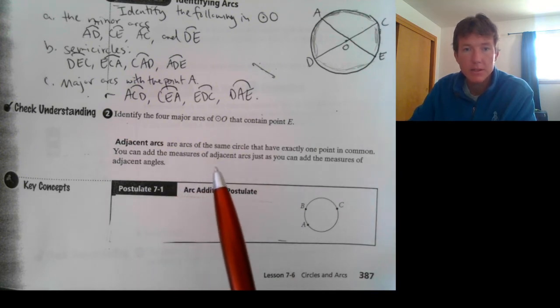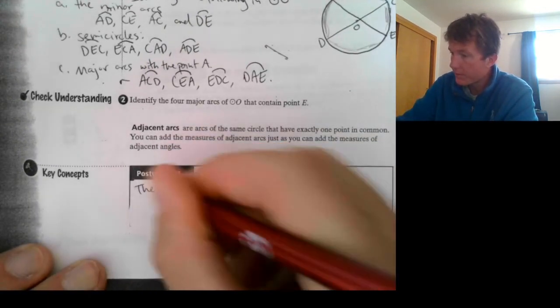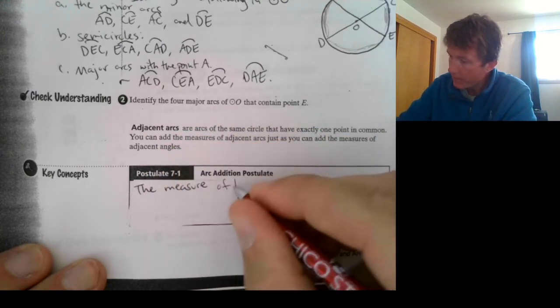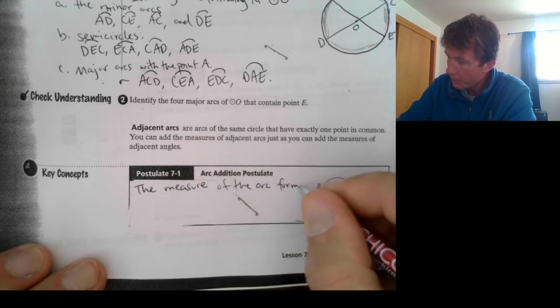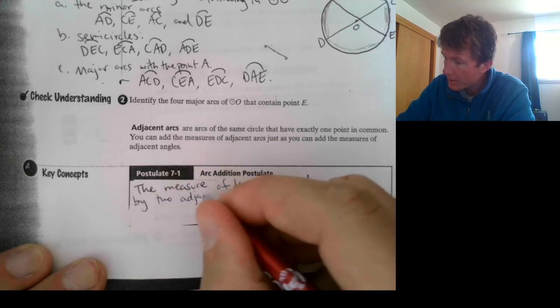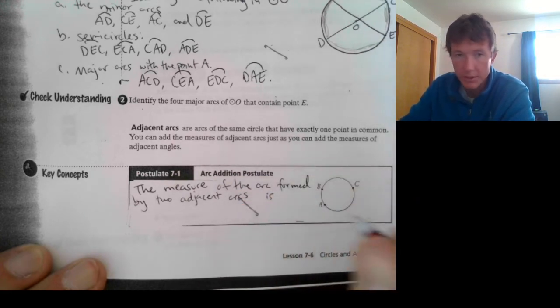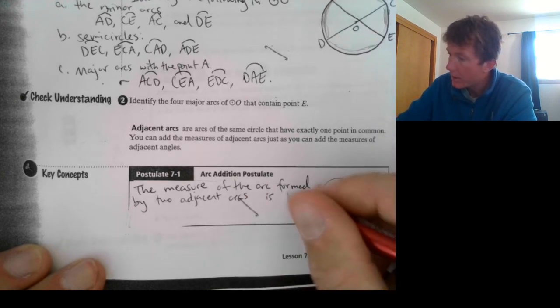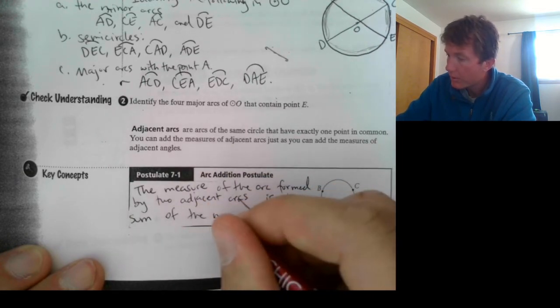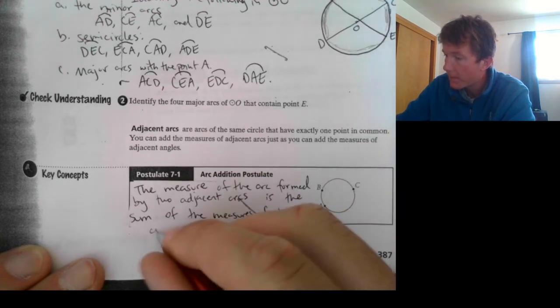You can add the measures of adjacent arcs just as you can add the measures of adjacent angles. So, let's write this down. The measure of the arc formed by two adjacent arcs is the arc addition postulate. So, it's going to include a sum, is the sum of the measures of the two arcs. So, we're just going to add those together.